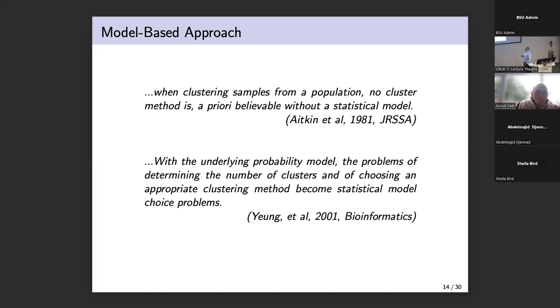This is from a paper in Journal of the Royal Statistical Society Series A from 1981 by Murray Aitken and co-authors. And they had a nice quote where they say, when clustering samples from a population, no cluster model is a priori believable without a statistical model. So it's very easy to sit down and come up with an algorithm like K means that kind of feels like it makes sense. But can we really understand what the algorithm is doing without a statistical model? A more recent quote from the bioinformatics literature basically mentions that if we go down the statistical modeling route, we have the whole inference machinery available to us to help us decide how many clusters, what are the clusters, etc.